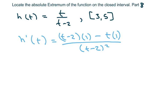And this is going to equal t minus 2 minus t over t minus 2 squared, and twos cancel out, so we're left with t over... let's see, sorry about that.